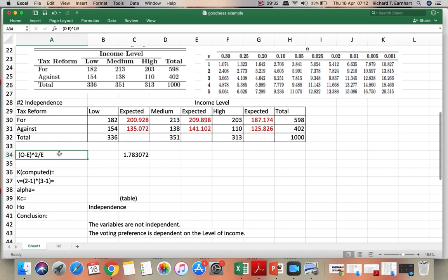We compute for the chi-squared value using the same formula as we did in the goodness of fit test. The observed values minus the expected values raised to the power 2 divided by the expected values.